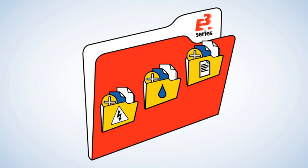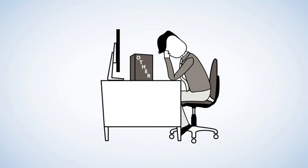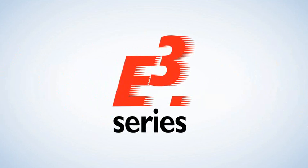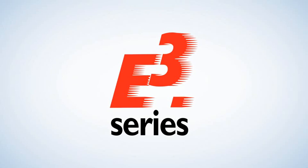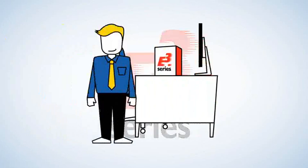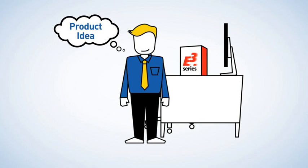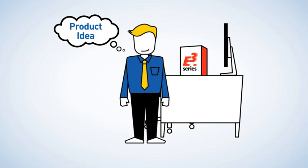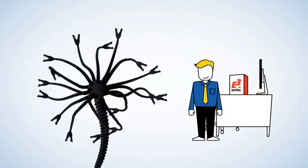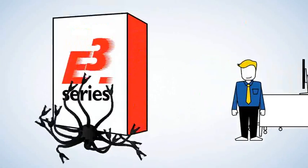That saves time and eliminates having to update the documents manually, which as we all know, can lead to errors. Zukin's E3 series intelligent data model also enables advanced online design rule checking, which reduces errors and improves product quality. It keeps this from turning out like this or for costing you this.